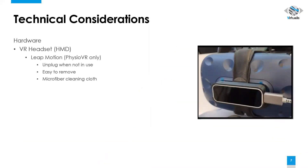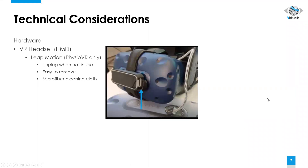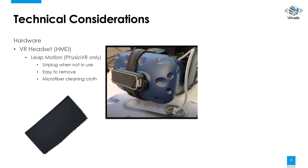On the front of your virtual reality headset is our Leap Motion device. This device is primarily used for the mirror and ball rehabilitation modules. If it's not in use, you can simply unplug the Leap Motion from the headset.